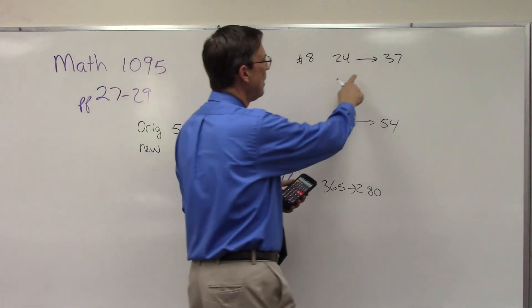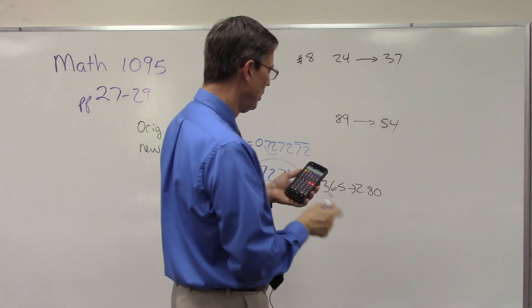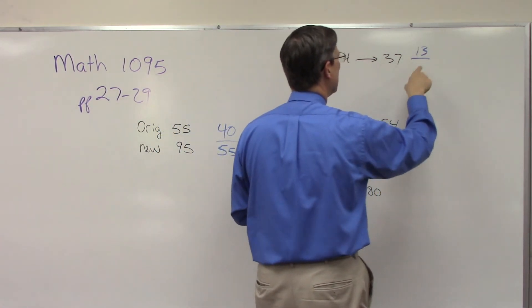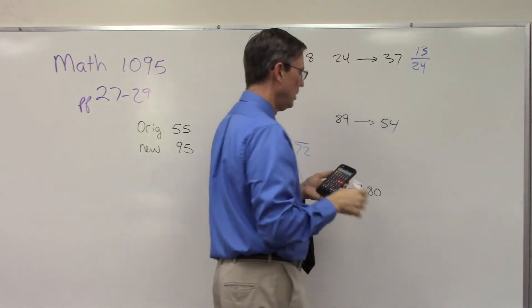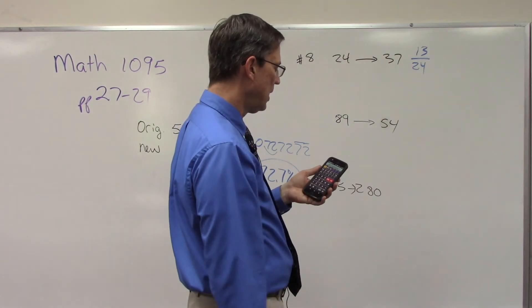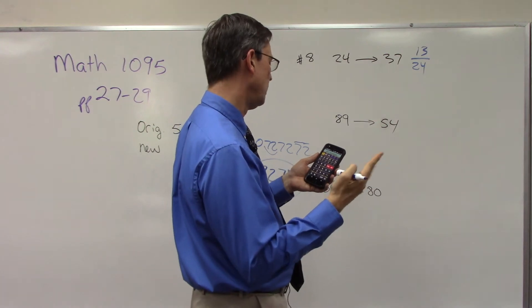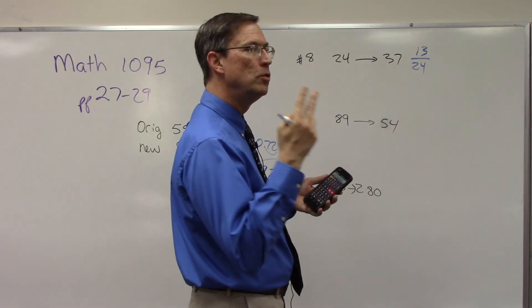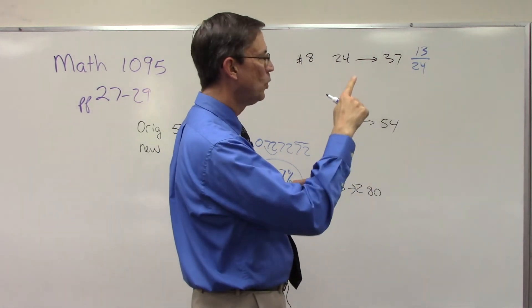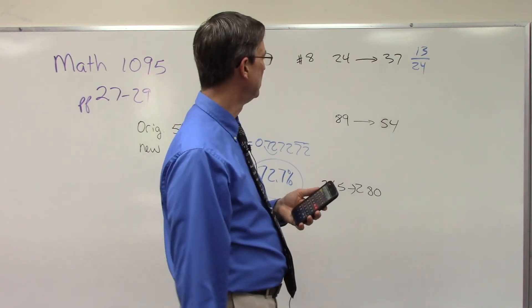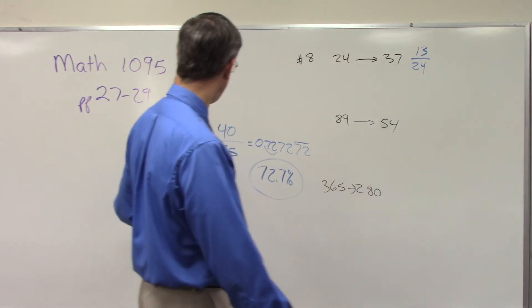Problem number eight: the original number was 24 and we're going up to a new number of 37. So I do 37 minus 24, which is 13. Again, you always divide by the starting number, so dividing by 24. In this case we get 0.54166 repeating. Move the decimal twice, then round to one decimal place.